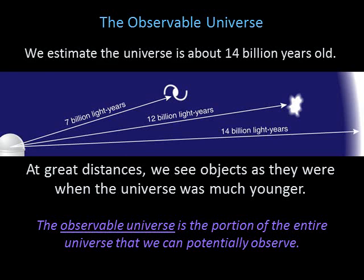We estimate that the universe is about 14 billion years old, and we'll talk about how we know this later in the semester. Because of the finite speed of light, the farther away something is, the longer it took the light to reach us. The light from a galaxy 7 billion light years away took 7 billion years to reach us, so we see that galaxy as it was 7 billion years ago.